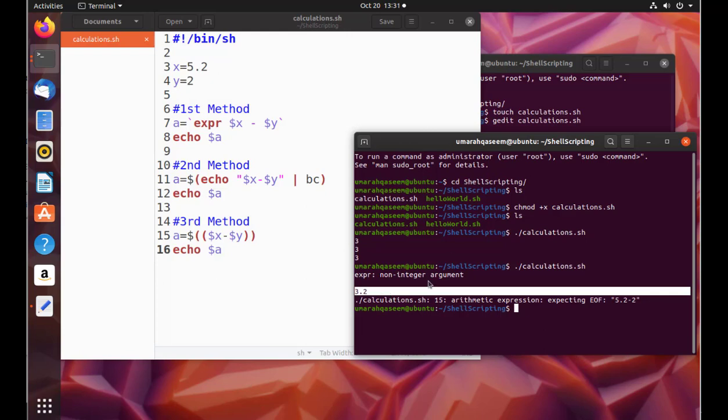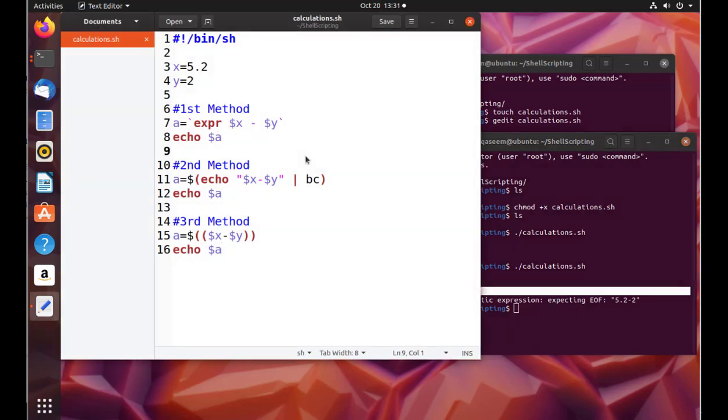So with this we come to the conclusion that among these three methods the first method and the third method cannot handle floating-point values. Only the second method, that is the bench calculator, it can handle the floating-point values.